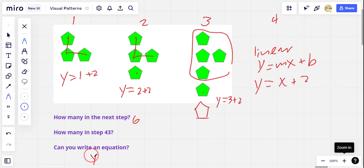So our equation is y equals x plus two. Having that equation makes figuring this out pretty easy. In step 43, the number of pentagons is just going to be y equals 43 plus two, and that is 45.